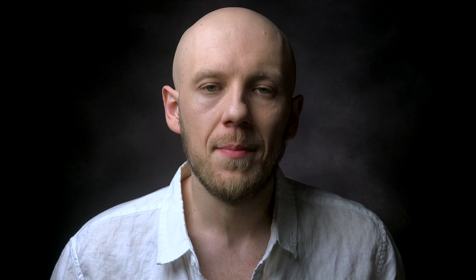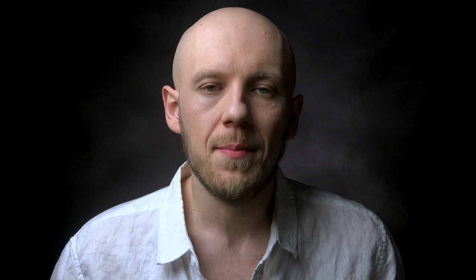Now let's talk about the stages. There are nine of them. We break them down into three categories — pre-conventional, conventional, and post-conventional — and you can add a fourth, the transhuman or transcendent category, though sometimes I lump the transcendent in with the post-conventional.